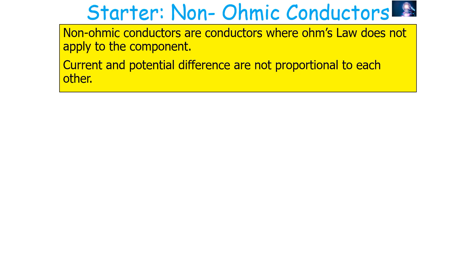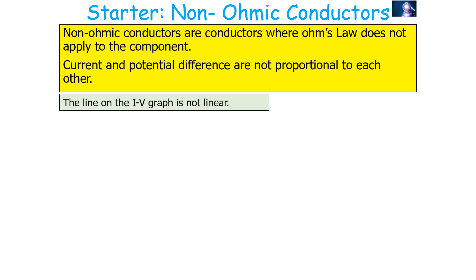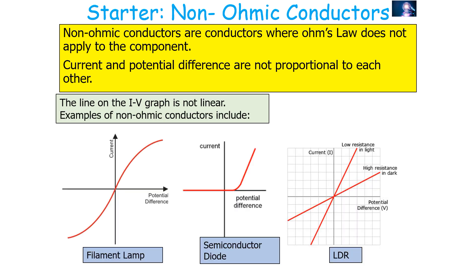Non-ohmic conductors are conductors where Ohm's law does not apply — the current and potential difference are not proportional to each other, so the line on the IV and VI graph is not linear. Examples of non-ohmic conductors include the filament lamp, shown with its particular graph, the semiconductor diode, shown with its graph, and the LDR shown with the graph on the right-hand side.